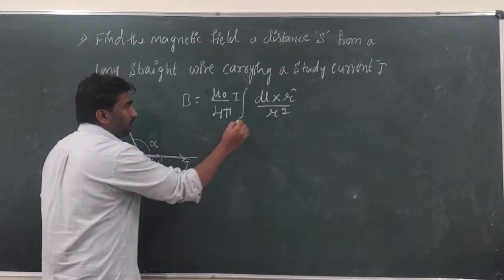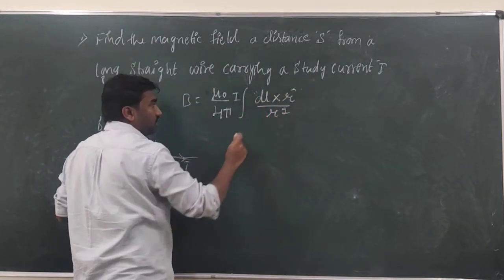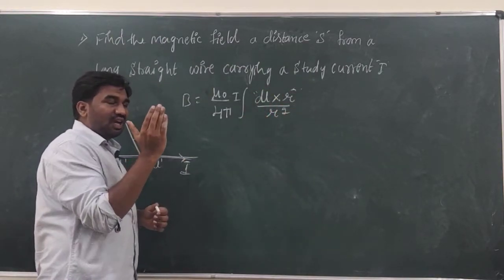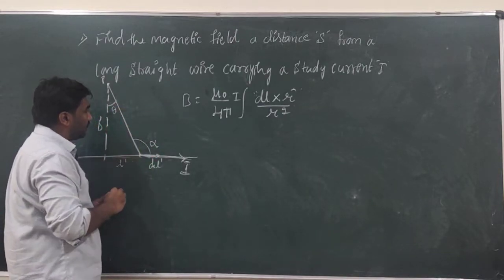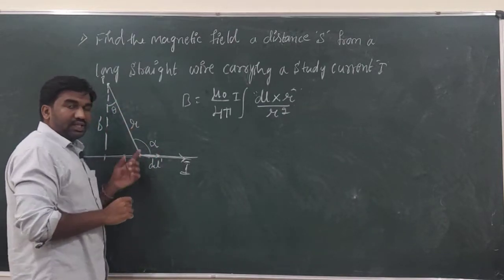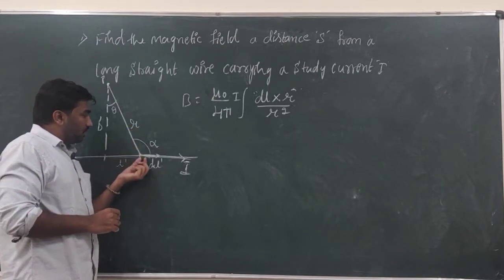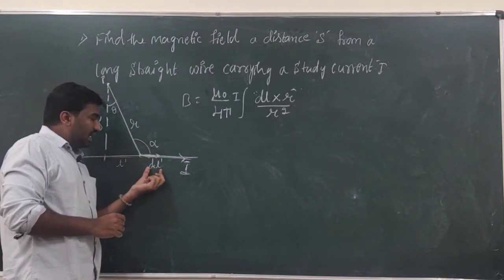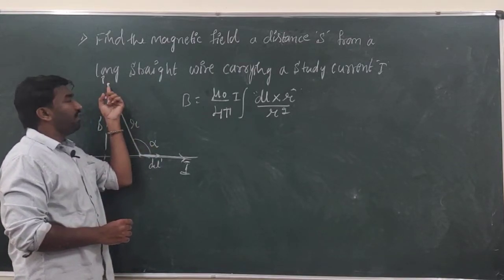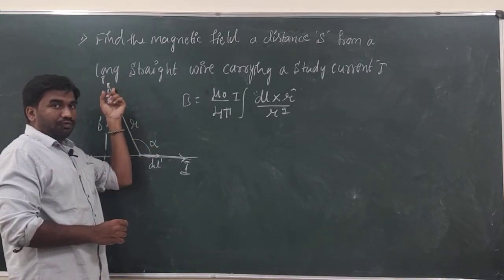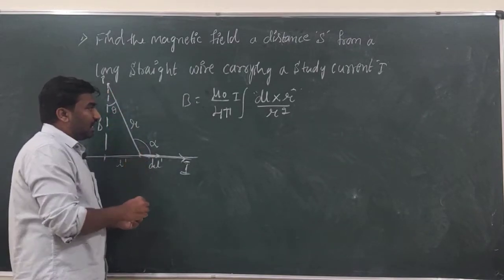First we have to find the value of dl cross r̂ and r². So dl is our length element vector and r̂ is the unit vector giving the direction from the current element dl to the point where you are calculating the field.